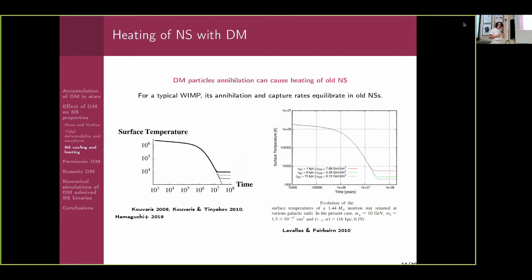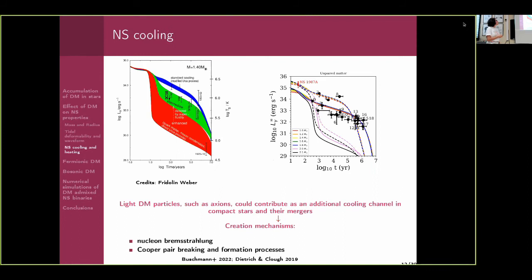There is also the heating scenario. If we plot surface temperature as a function of time, we would see a difference for very old neutron stars — from around 10⁷ to 10⁸ years. Depending on the amount of dark matter and on the distance from the galaxy center — one kiloparsec, eight kiloparsecs, two kiloparsecs — we have different amounts of dark matter in compact stars and therefore different degrees of heating. The problem is that we still don't have experimental data for very old neutron stars — we are missing data beyond 10⁷ to 10⁸ years.